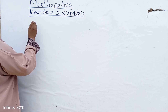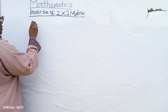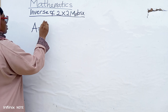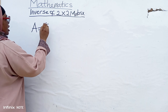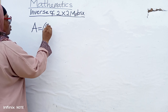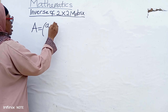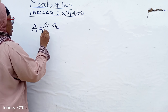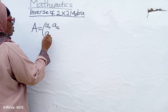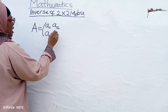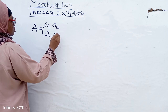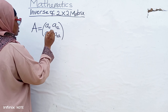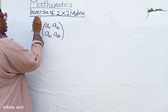So let's say we have A equal to A11, A12, A21, and A22. So here is the shortcut method.